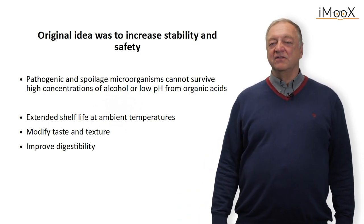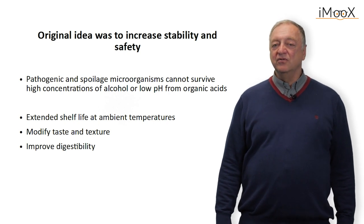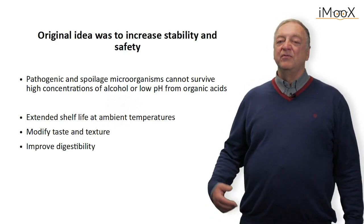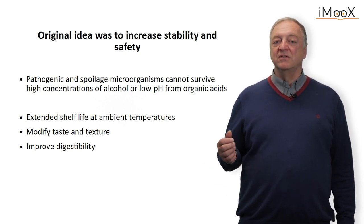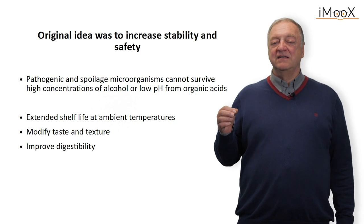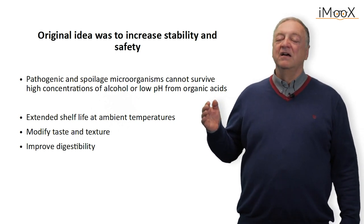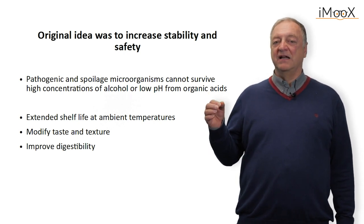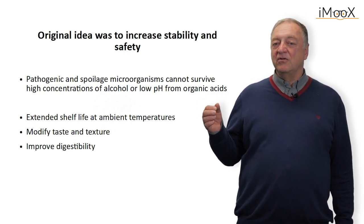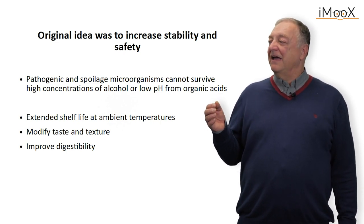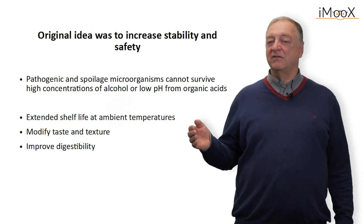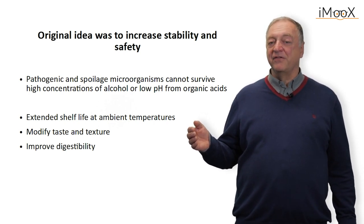Originally, and this goes back several thousand years, fermentations were used mainly to remove pathogens and to improve the stability of specific foods. For example, when we produce alcohol, lactic acid, or acetic acid, the pH is reduced so that we are in a safe range, meaning below pH 4.5. In addition to the low pH, we have the presence of organic acids or alcohol, which are both detrimental to pathogenic and spoilage microorganisms. In the end, after fermentation, we have a product with extended shelf life, which can be stored at ambient temperatures for a prolonged period — up to several months.